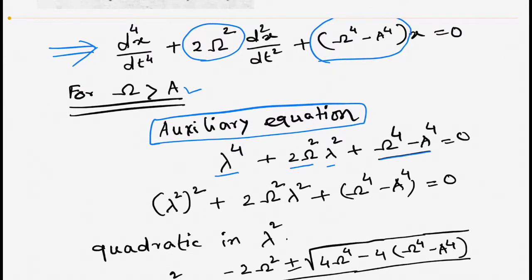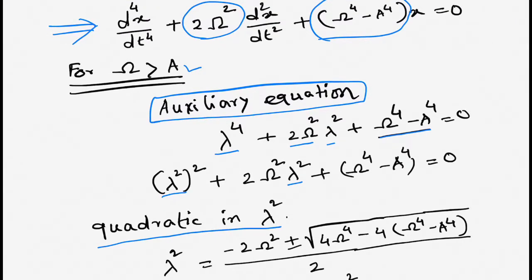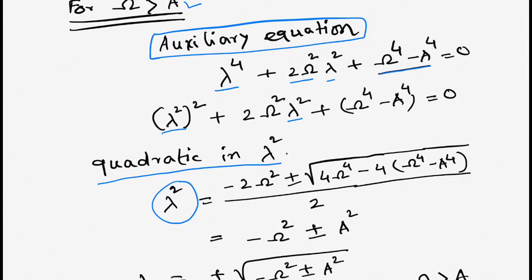We can see that the first term λ⁴ is (λ²)², so this is basically a quadratic in λ². We can solve this quadratic in terms of λ², since it is a second-degree polynomial in λ². Using the quadratic formula, λ² = [−2ω² ± √(4ω⁴ − 4(ω⁴ − a⁴))] / 2, which simplifies to −ω² ± a².